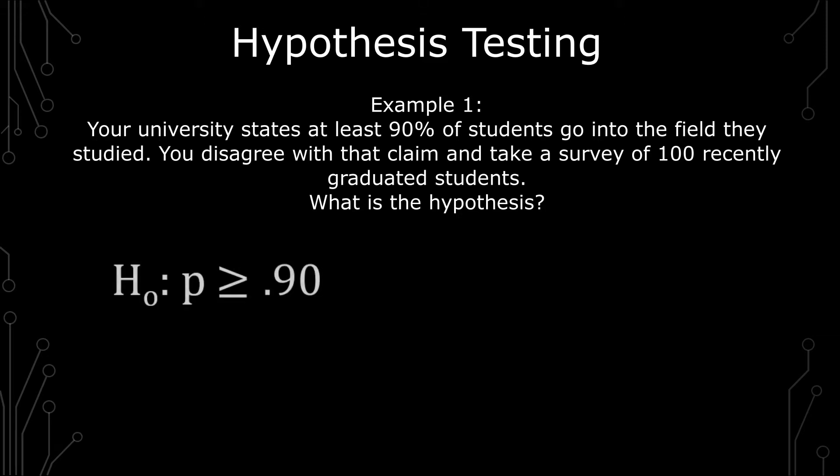The null hypothesis would be p greater than or equal to 0.9. The reason why it's 0.9 instead of 90 is because we're dealing with a percentage, and that's also why instead of mu, I'm using p as the symbol there. If you're using something that's not a percentage, it's typically mu, but in this case, because we know it is a percentage, we use p. The alternative hypothesis is written as p less than 0.9.